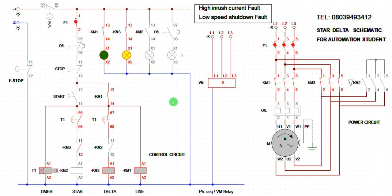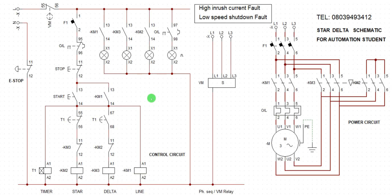Now let us point out the error in this design. When star is on with the line contactor, the motor runs on low speed. When line and delta are on, the motor runs on high speed. Now, the first fault: high in-rush current fault. This means the star contactor is not working — only the delta contactor and main contactor are working. When the system runs on delta only without star, that is when this fault arises.